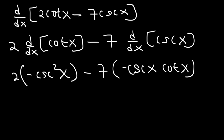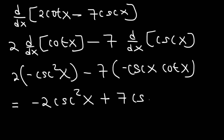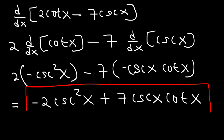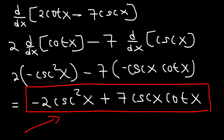You really only need to know the derivatives of sine, tangent, and secant. If you know those three, you can figure out the other three. The final answer is negative 2 cosecant squared x plus 7 cosecant x cotangent x. If you want to, you can factor out the GCF, which is cosecant x, but I'm going to leave the answer like this.